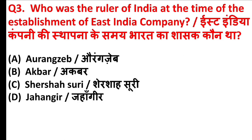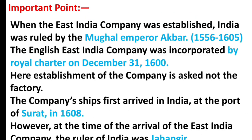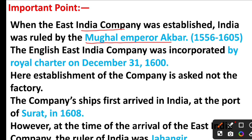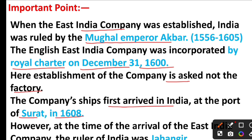Who was the ruler of India at the time of the establishment of the East India Company? The answer is Option B, Akbar. When the East India Company was established, India was ruled by the Mughal Emperor Akbar. The English East India Company was incorporated by Royal Charter on December 31, 1600. Note that the establishment of the company is asked, not the factory. The company's ships first arrived in India at the port of Surat in 1608; however, at the time of arrival, the ruler of India was Jahangir.